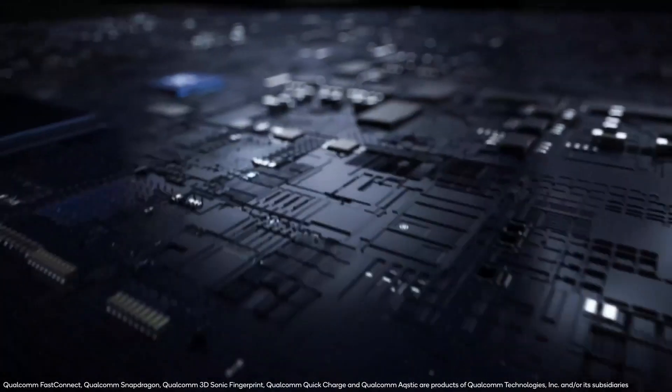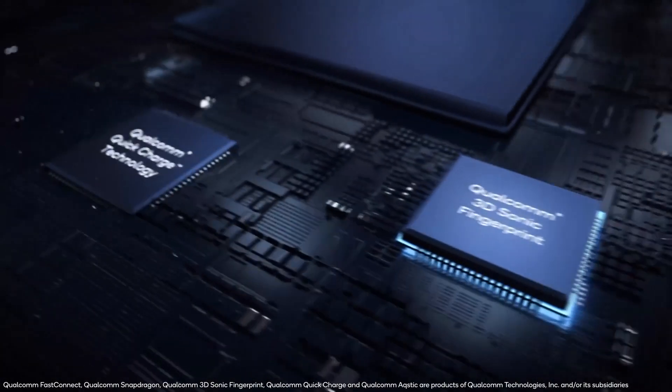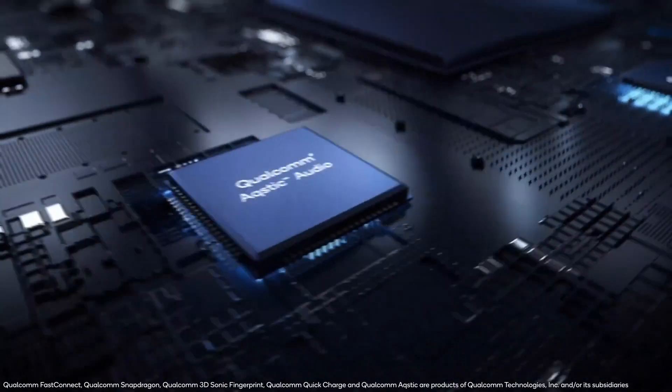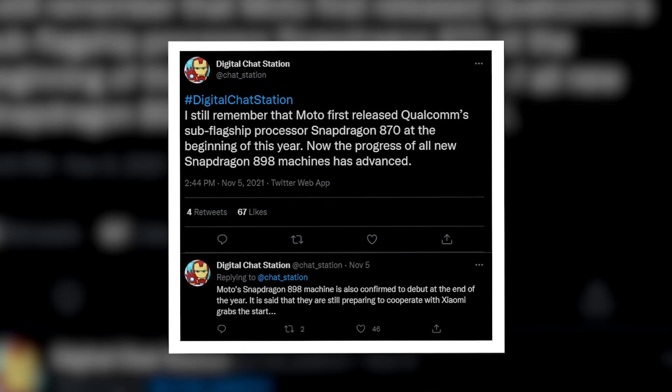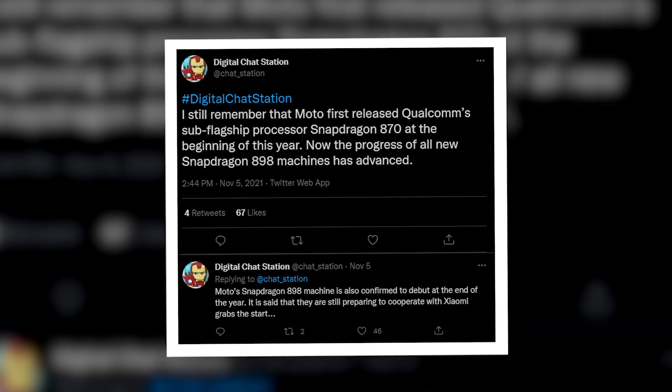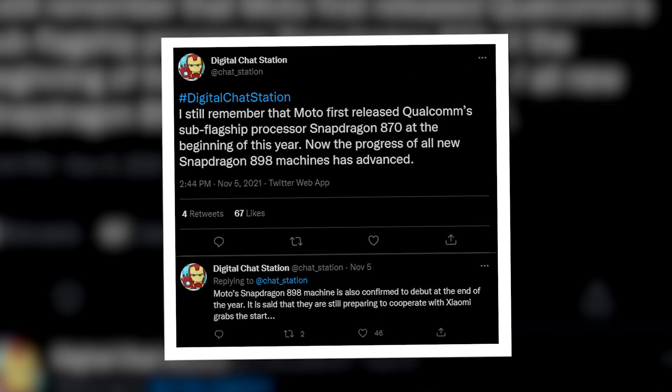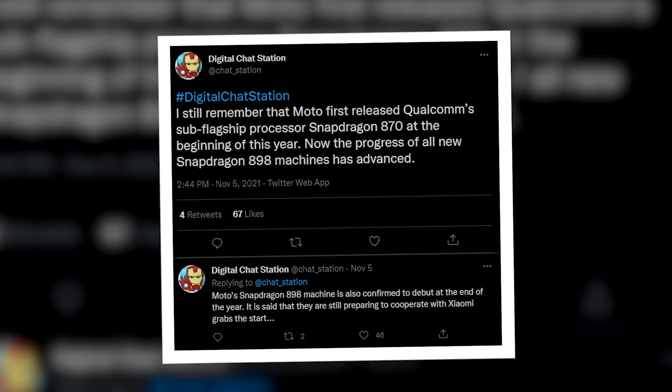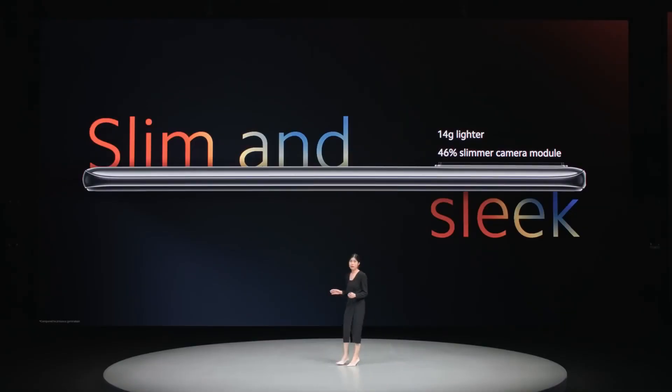We just learned which manufacturers might be first to make handsets powered by the new powerful chip. According to well-known tipster Digital Chat Station, both Xiaomi and Motorola are battling it out to get their Snapdragon 898 devices out in front of buyers before anyone else. And these phones could make an appearance before the end of the year.